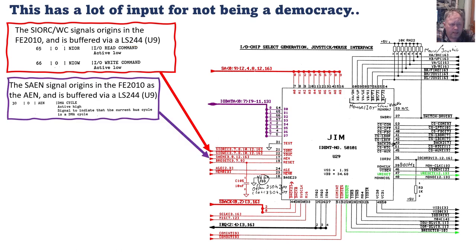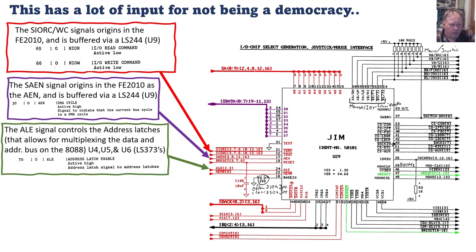The AEN signal tells the system that what's going on on the data and address bus is direct memory access — it's not the CPU that has initialized this data read or write from memory. It's buffered through the same chip and has an S in front of the name. The ALA signal is a common signal on all 8088 and 8086-based computers because it allows the computer to multiplex the address and data bus, so the size of the chip can be much smaller because the pins are shared.